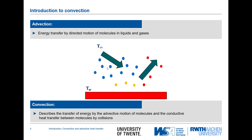Convection is the sum of advective motion and diffusive motion. Those molecules are transferred through the wall by a fluid flow, but close to the wall, with the no-slip boundary condition, the velocity of the molecules becomes lower and lower until it reaches zero at the wall. So close to the wall, there is still a massive influence of conduction, and convective heat transfer describes the entire process including both advection and conduction in the boundary layer.